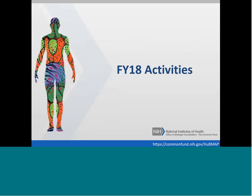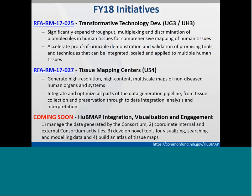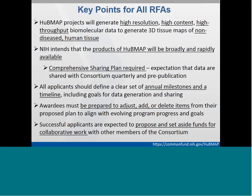We'll now transition to look in more detail at the three RFAs that will kick off the program this year. We have three announcements: two currently published and one coming soon. These will form the initial core of the program. The three RFAs are the Transformative Technology Development Announcement, the Tissue Mapping Centers, and the HIVE — the HubMap Integration Visualization and Engagement Center. The plan is that these will be relevant also to future RFAs, pending the availability of funds and progress in the program.